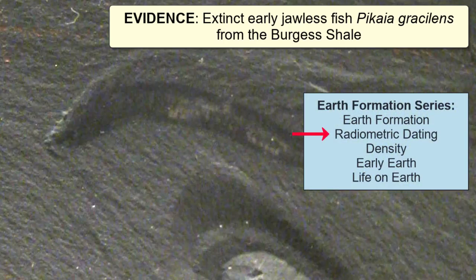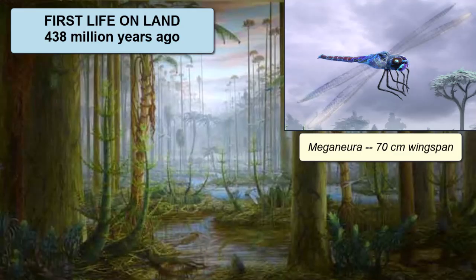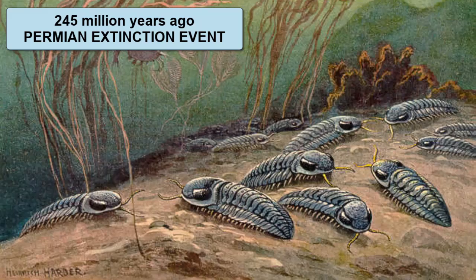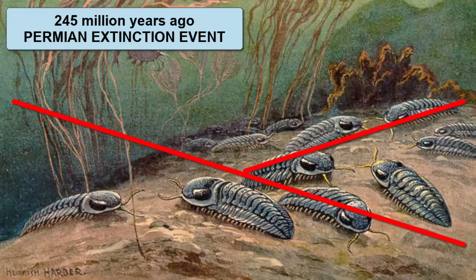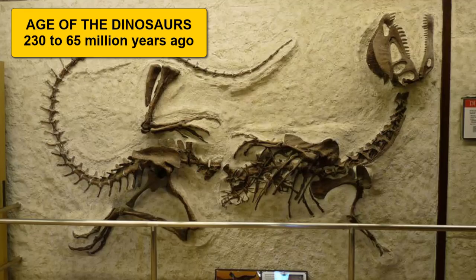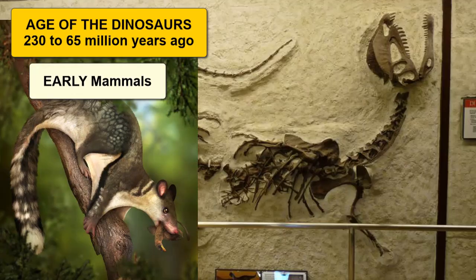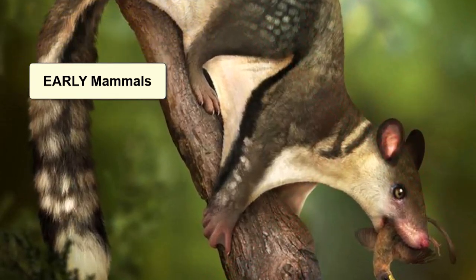Watch the video tutorial on radiometric dating for more information on that process. 438 million years ago is our first evidence of organisms moving onto land, including the first plants and insects. 245 million years ago was the largest mass extinction on the planet, during which the trilobites and many other early forms of life went extinct. Dinosaurs evolved soon after and dominated the planet during the age of the dinosaurs, which lasted from 230 to 65 million years ago. Early mammals co-existed with the dinosaurs, but after the dinosaurs went extinct 65 million years ago, mammals continued to evolve to fill the now-empty niches left behind.